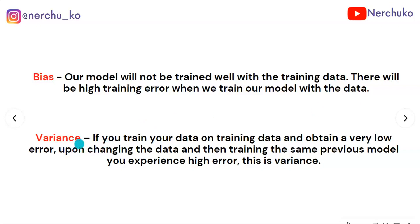The second component is variance. If you train your model on training data and obtain a very low error, but upon changing the data and training the same model again, you experience high error — this is variance.